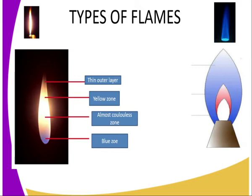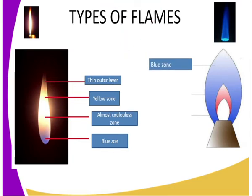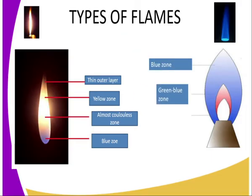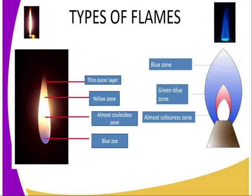The non-luminous flame is a very hot type of flame and has three zones: the blue zone, the green-blue zone in the middle part, and the almost colorless zone at the bottom. These two flames are used in different ways — the luminous flame, being bright yellow, is used for lighting, while the non-luminous flame, being very hot, is used for heating in the laboratory.